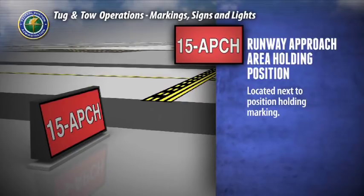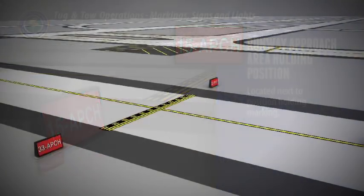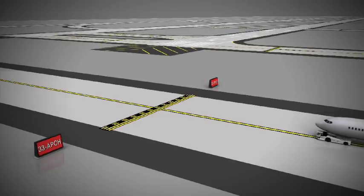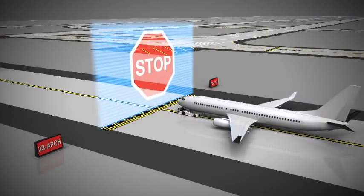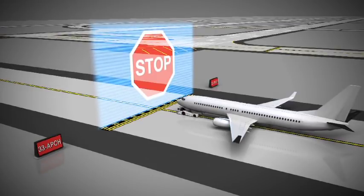The runway approach area holding position sign will be located on the taxiway next to yellow holding position markers. Its purpose is to hold an aircraft on a taxiway short of a runway approach or departure area, so the aircraft does not interfere with runway operations — such as penetrating the airspace required for the approach or departure runway, or crossing through the runway safety area. You may not move beyond this sign until you are cleared by air traffic control.